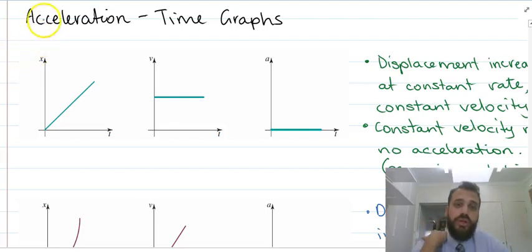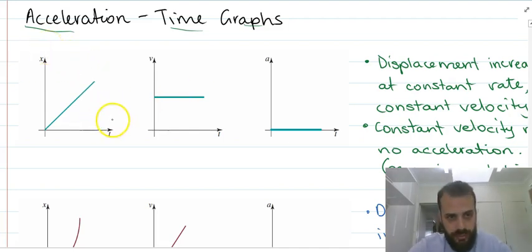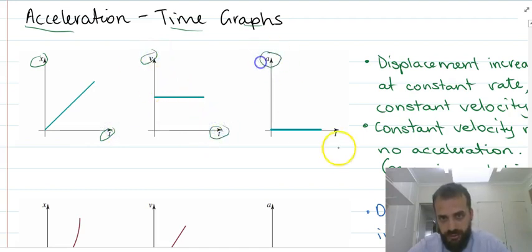You're going to have to be able to interpret acceleration-time graphs. Now you already know that we can step backwards here: displacement-time graph, velocity-time graph, acceleration-time graph. So you should be able to move from here to here.